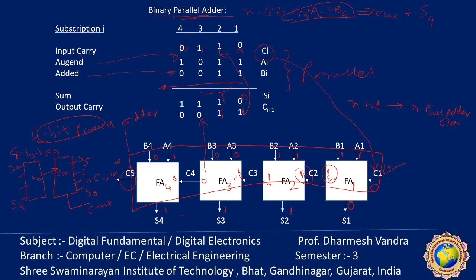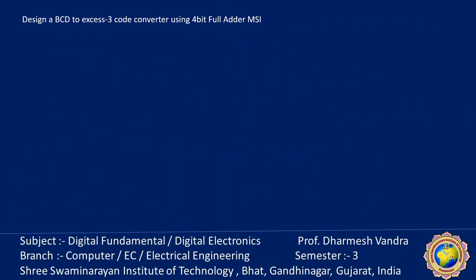The 4-bit full adder is a typical example of an MSI (medium scale integration) function. It can be used in many applications involving arithmetic operations. Observe that designing this circuit using the classical method would require a truth table of 2 raised to the power 9, which is 512 entries, since there are 9 inputs to the circuit. By using the iterative method of cascading and the already known full adder function, we are able to obtain a simple and well-organized implementation. Let us take one application of the MSI 4-bit full adder: a BCD to XS3 code converter.